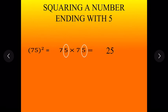Now we will add 1 to this 7. So 7 plus 1 is 8 and we will multiply 7 and 8. So 7 multiply by 8 is 56. So 5625 is our answer. Isn't it so easy and quick?